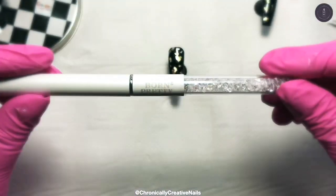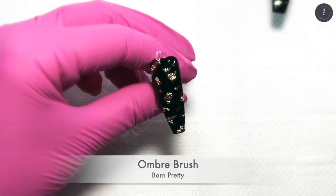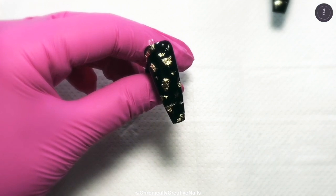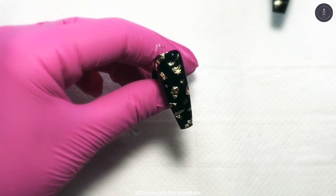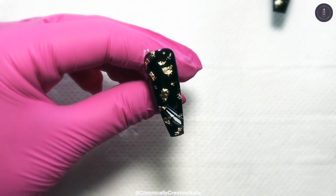There we go. So I'm just going to take this Born Pretty Ombre Brush and put some of the white on it, wipe off so it's not fully loaded, and just quickly swipe that onto the nail in whatever direction takes your fancy.